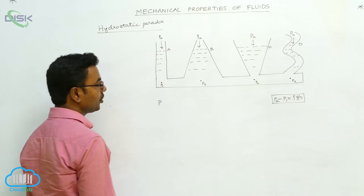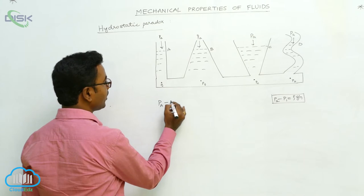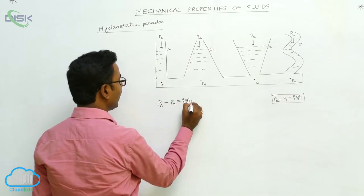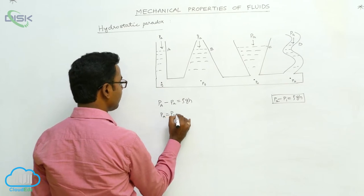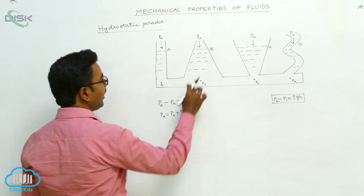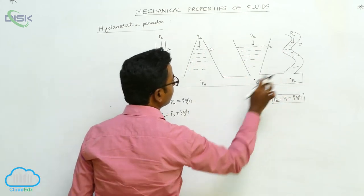Now I can write PA equals Pa plus ρgh. Now here this height is the same for all, so that the pressure is same at all points.